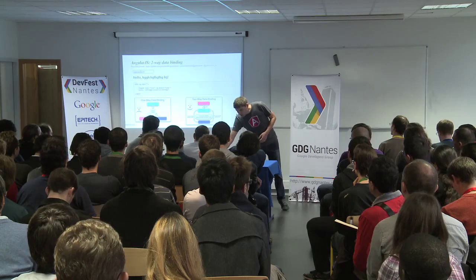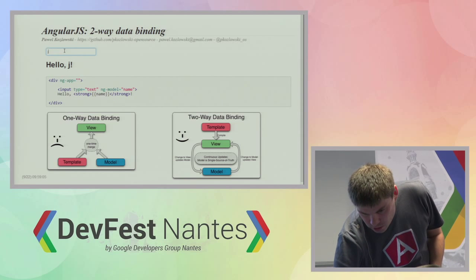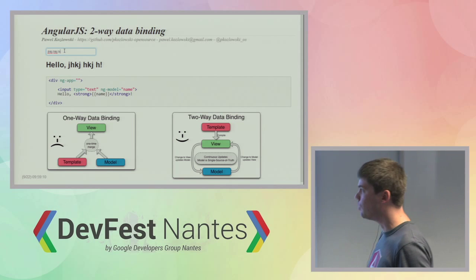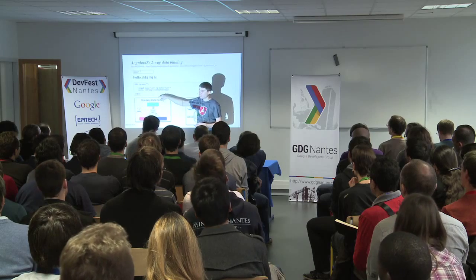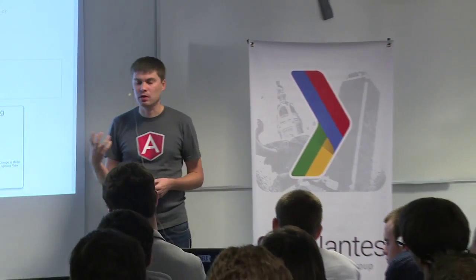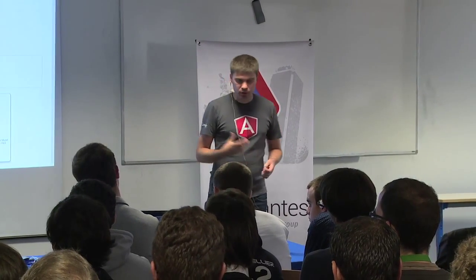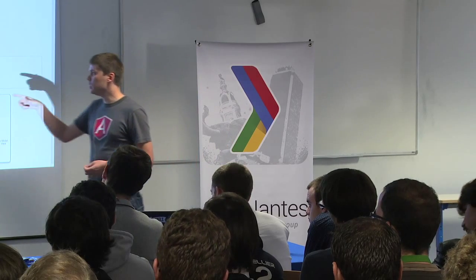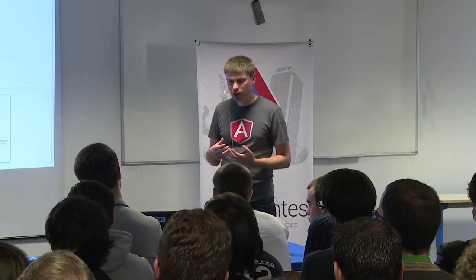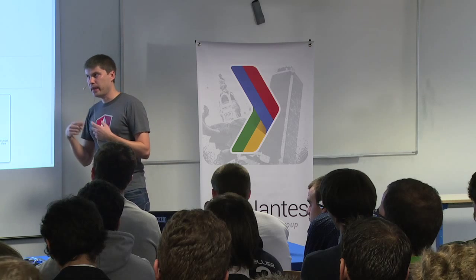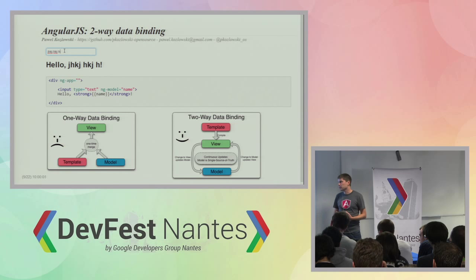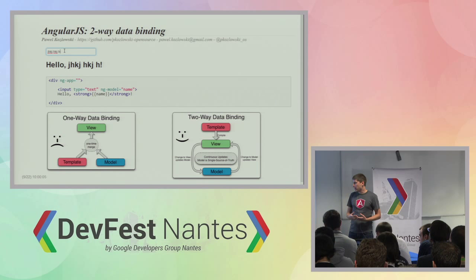What ng-model does is say: dear AngularJS, whenever anything in the DOM changes, take the value from the input and put it in the name variable. At the same time, whenever this variable changes, output it in the DOM. So we start to have a two-way connection: every time something interesting changes in the DOM, we can take some interesting value from the DOM and put it in a JavaScript variable. As soon as it's available in JavaScript, we can immediately output it on screen. We don't have to register any DOM listeners here — we don't have to explicitly say 'when this thing changed, please render a template.' AngularJS will observe all the model mutations and do the heavy lifting for us.